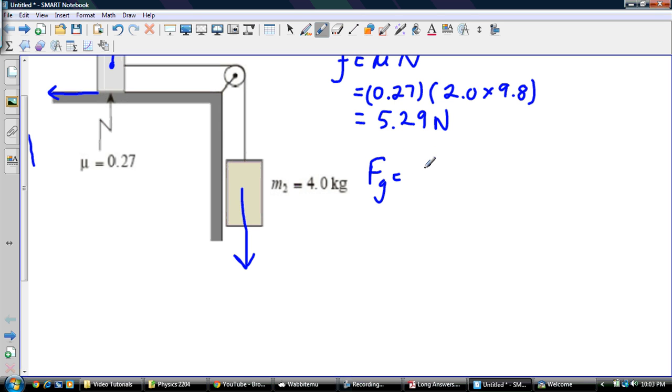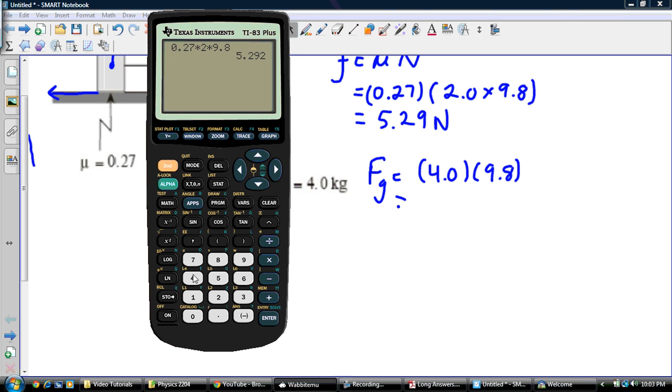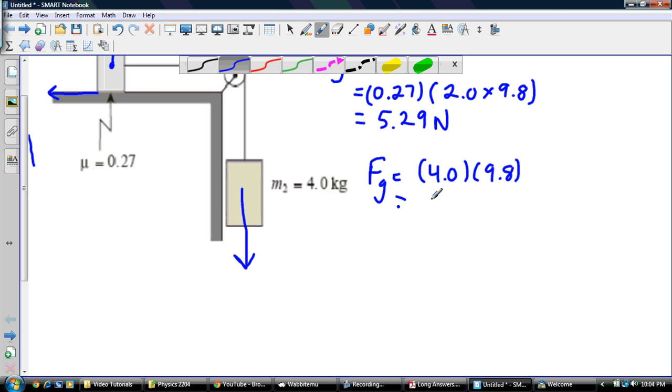The force of gravity acting on this thing is mass 4.0 times gravity which is 9.8, so 4 times 9.8, and that's equal to 39.2 newtons. And so that's my force acting on this mass acting down. So this frictional force here and this force of gravity compose the net force of the system.